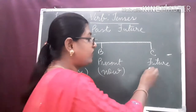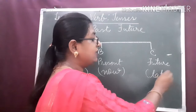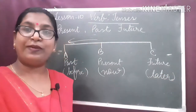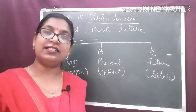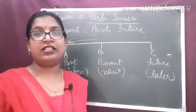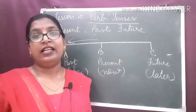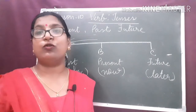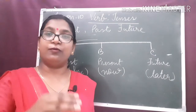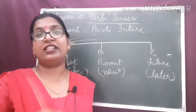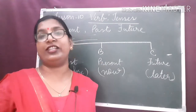So it tells us about the action which will happen later. Basically there are three tenses: present tense, past tense, and future tense. My dear children, these three tenses are divided into four more categories. Each tense is divided into four more categories. Total there are twelve tenses.